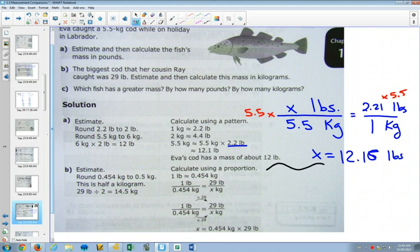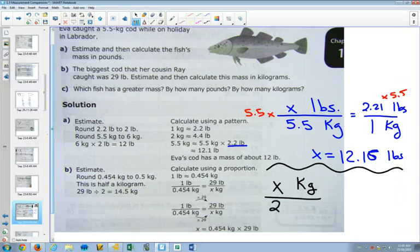For part B, the biggest cod that her cousin Ray caught was 29 pounds. We want to calculate how much that is in kilograms. Again, as an estimate, we know that 1 kilogram is about 2 pounds. So if I was estimating, I'd cut that in half and say, I'd estimate it to be about 14.5, 15 kilograms. It's going to be a little bit less than that. But now when we go to calculate, we want to find how many kilograms. And we know that it was 29 pounds. It's a pretty big fish.